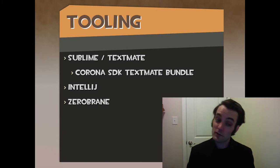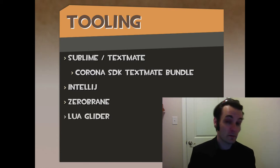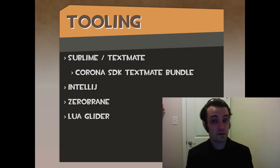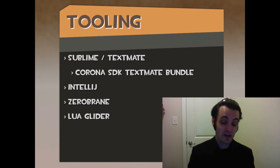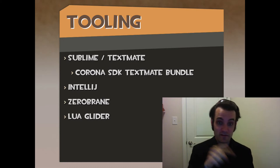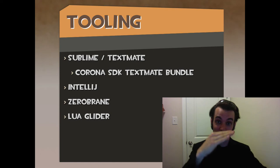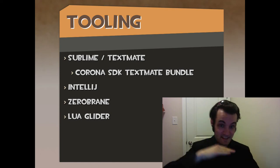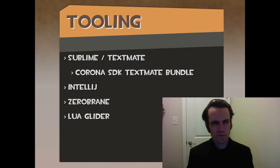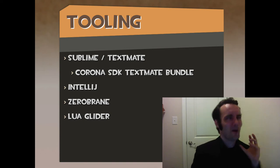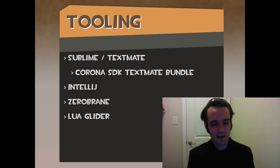ZeroBrane is another one I've tried. LuaGlider was probably my favorite, because you can actually set breakpoints, see values of variables, change the values, and step forwards and backwards through your code. You can see the stack — it's one of the only ones I know that does that and does it well. But from a coding perspective, Sublime's better, so that's the only thing I didn't like about Glider.